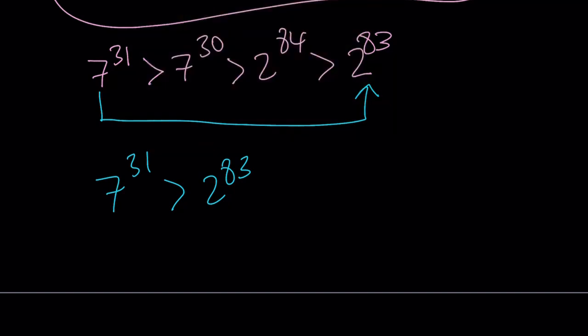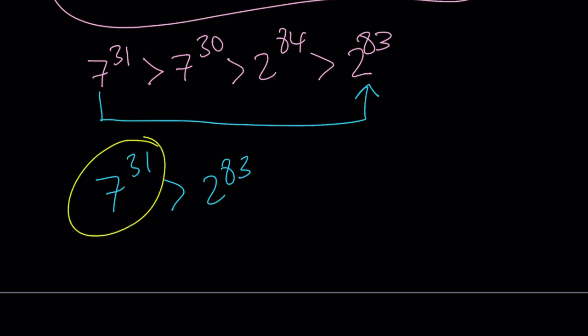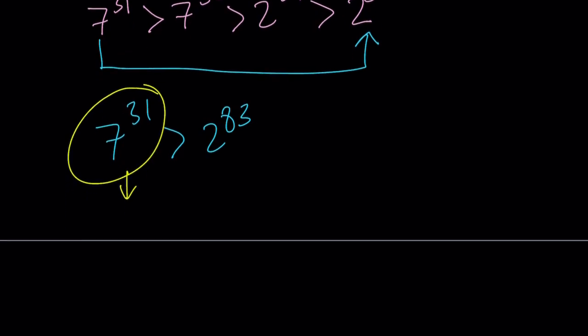Now, if you look at the numerical values of these numbers, 7 to the power of 31 is approximately 1.58 times 10 to the power of 26. That's a pretty large number. And 2 to the power of 83 is approximately 9.67 times 10 to the power of 24. So that's close to being maybe about 10 times larger.